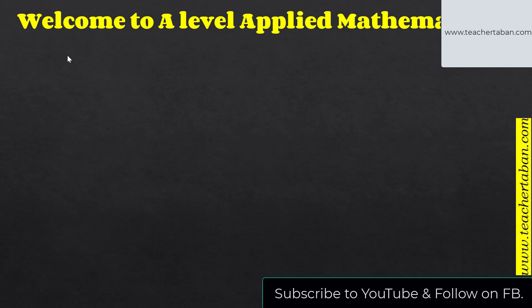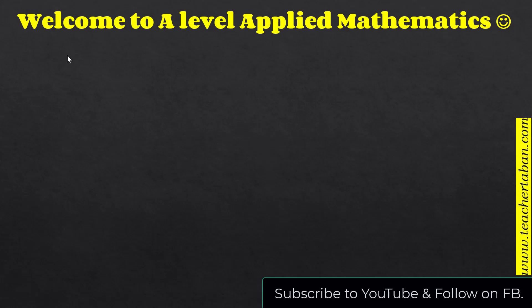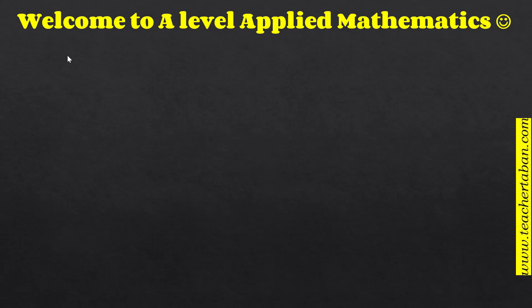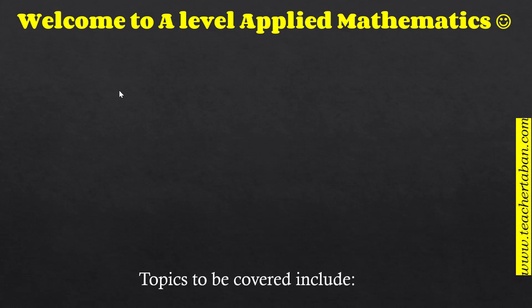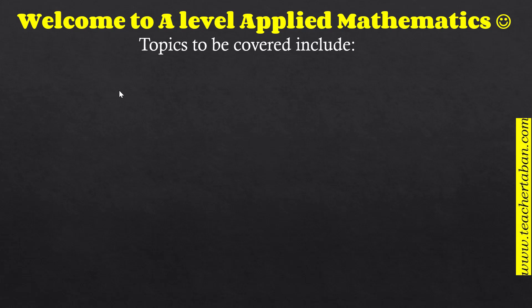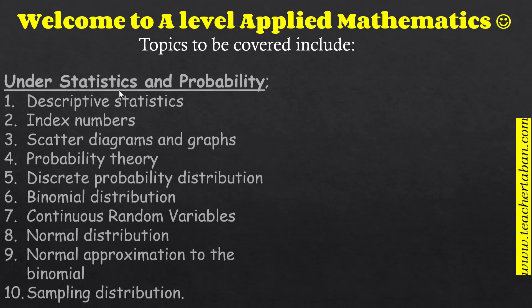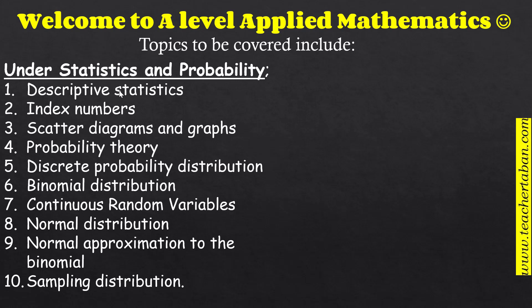Hello students, welcome to A-level — specifically advanced level mathematics, and most specifically to applied mathematics. We have two papers in mathematics: pure math and applied mathematics. In applied mathematics we shall be looking at many topics broadly categorized into three major parts: statistics and probability, numerical methods, and mechanics. Here is a list of subtopics under statistics and probability — please pause the video and read through.